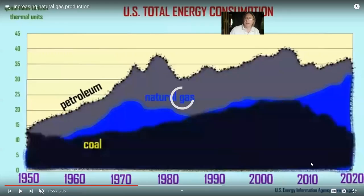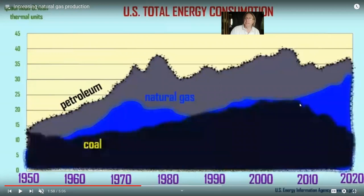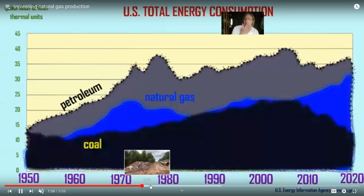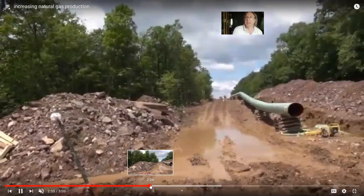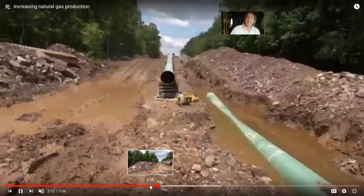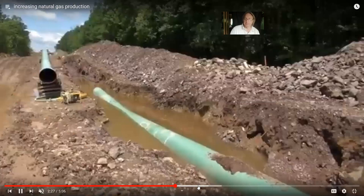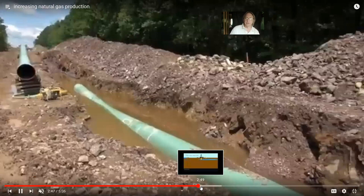Starting in 2010, there has been a sharp increase in the amount of natural gas produced. This has been a major factor in the decrease in coal use, because natural gas pollutes less than coal and has lowered the price of producing electricity, making coal less viable. Large pipelines have been constructed to send natural gas to Canada and Mexico, and pipelines allow natural gas to generate electricity.